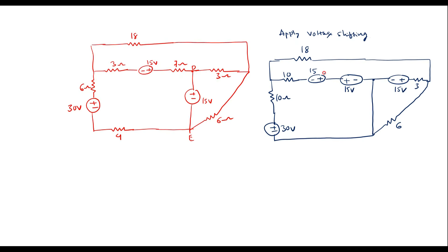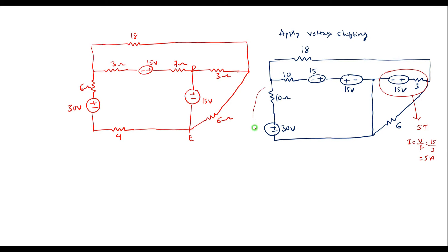Now here we can see that the 15 volt has polarity minus-plus, and here the other 15 volt has polarity plus-minus. So these voltages will get cancelled — the resultant voltage will be 0. If the voltage is 0, this will be short circuited. I will replace these two voltage sources by a short circuit. Then here we observe that there is a voltage source in series with a resistor. Applying source transformation: I is equal to V by R — V is 15 divided by 3, which is equal to 5 amp.